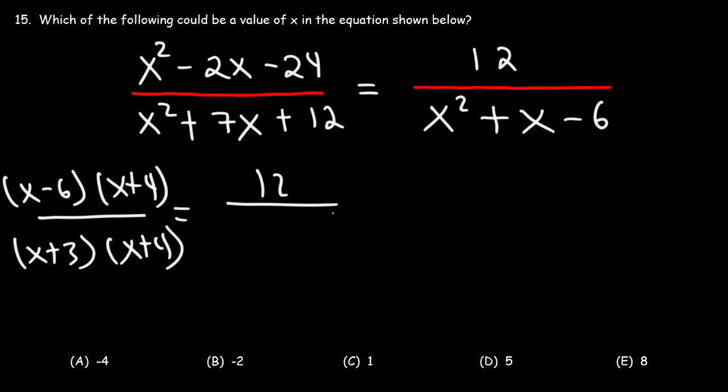Now, for the last one on the bottom right, two numbers that multiply to negative 6 but add to positive 1 would be positive 3 and negative 2. So we have x plus 3 times x minus 2.